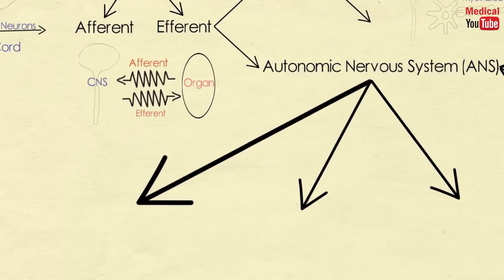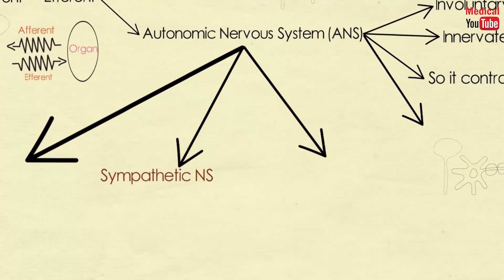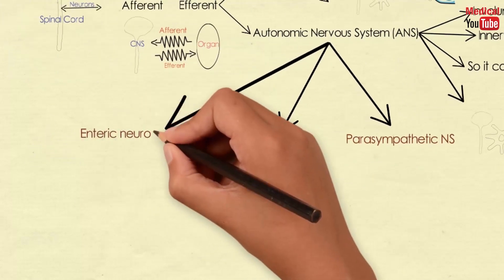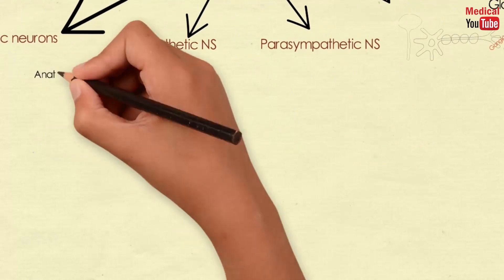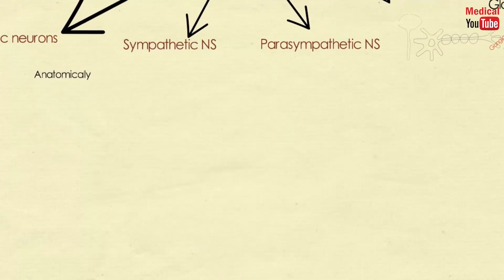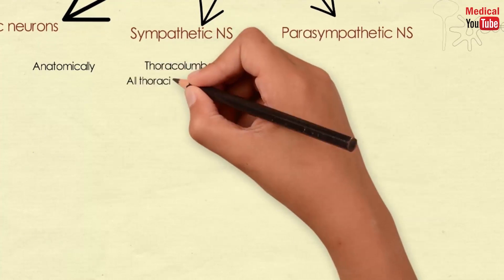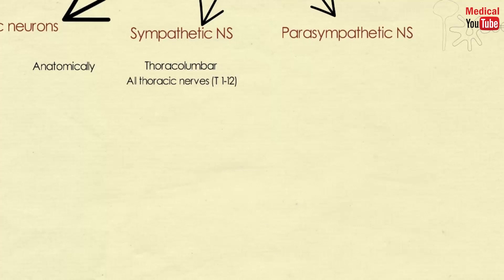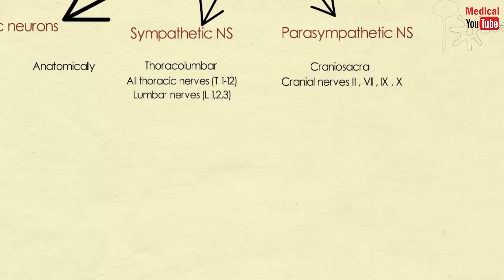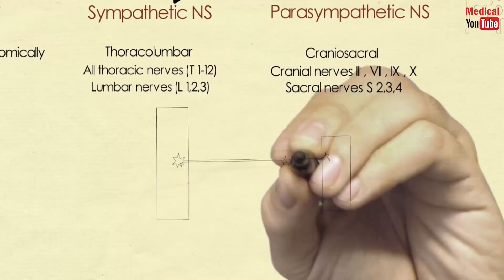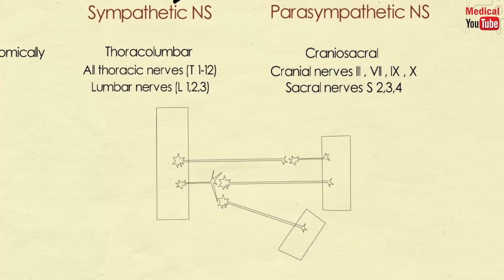The efferent ANS is divided into the sympathetic and the parasympathetic nervous systems, as well as the enteric nervous system. Anatomically, the sympathetic and parasympathetic neurons originate in the CNS and emerge from two different spinal cord regions. The pre-ganglionic neurons of the sympathetic system come from the thoracic and lumbar regions, and the parasympathetic pre-ganglionic fibers arise from cranial nerves 3, 7, 9, and 10, as well as from the sacral region S2 to S4 of the spinal cord.